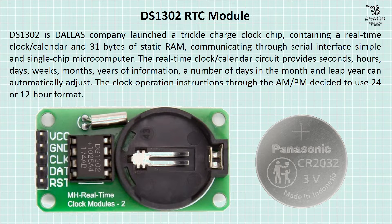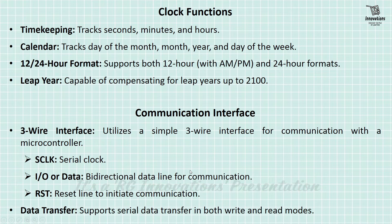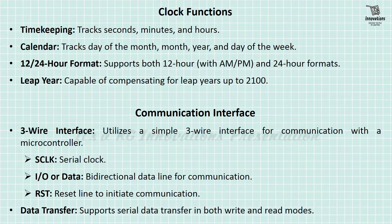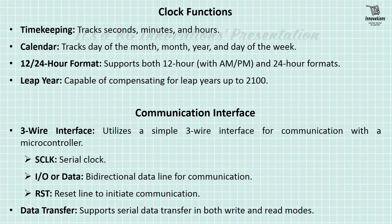Clock operation uses AM/PM instructions to select 24-hour or 12-hour format. In this picture we can see the DS1302 module based on a single chip — these pins are for power supply and these three pins are for data connection. We use a coin cell battery for backup power supply. The clock functions include: timekeeping — tracking seconds, minutes, and hours; calendar — tracking day of month, year, and day of week; 12 or 24 hour format support; and leap year compensation up to 2100.